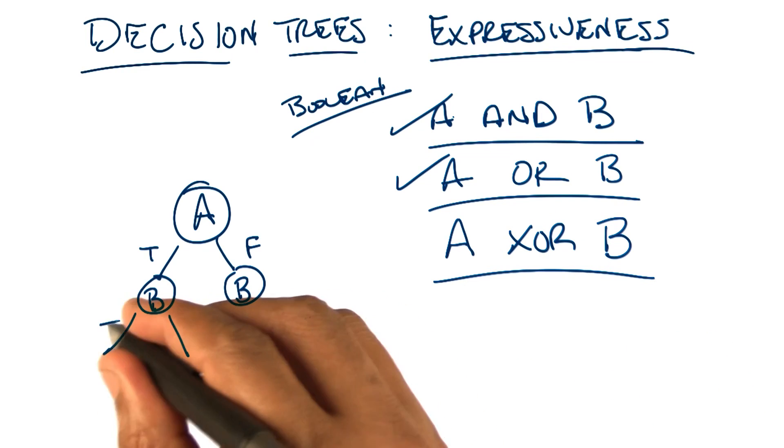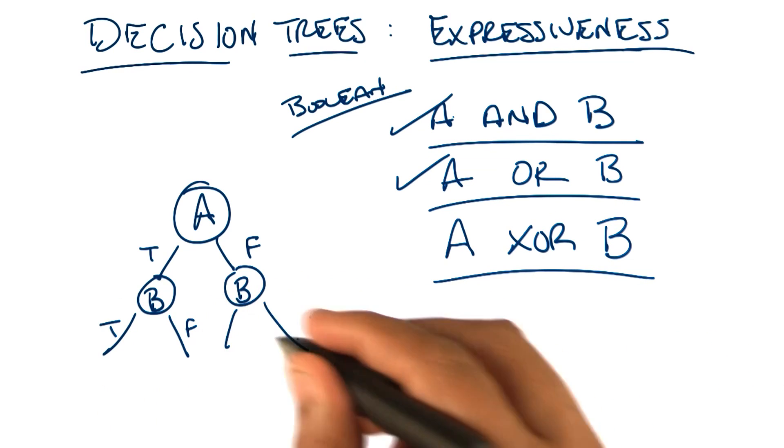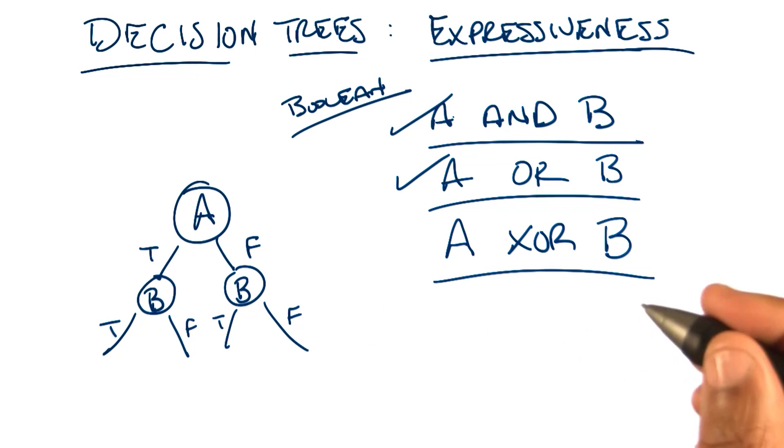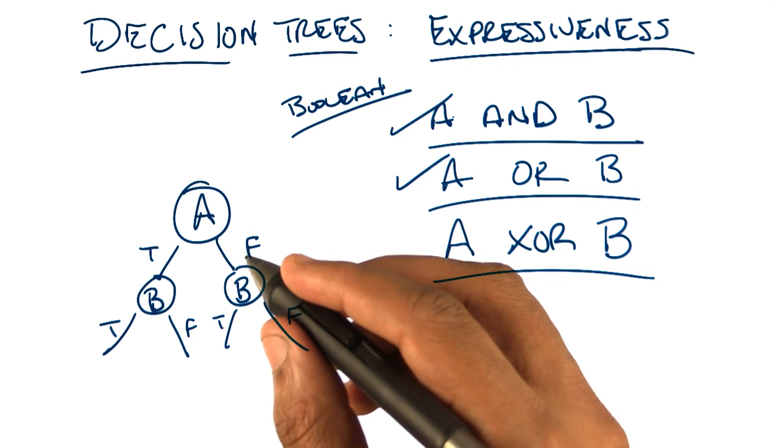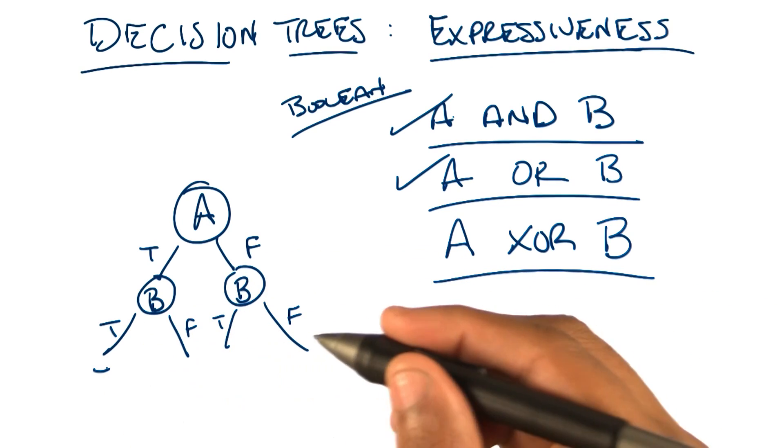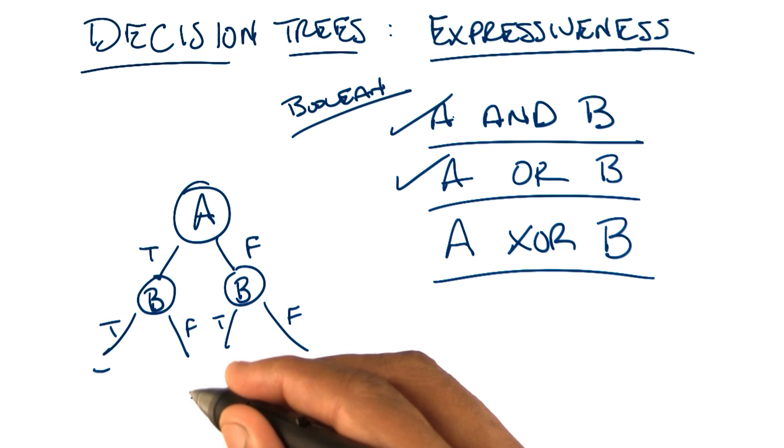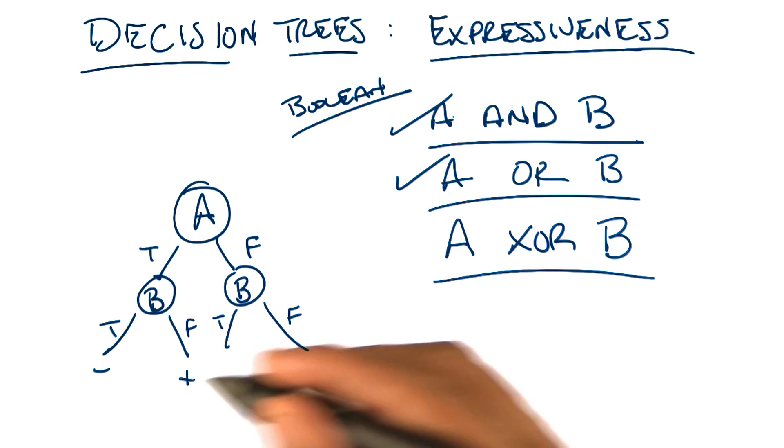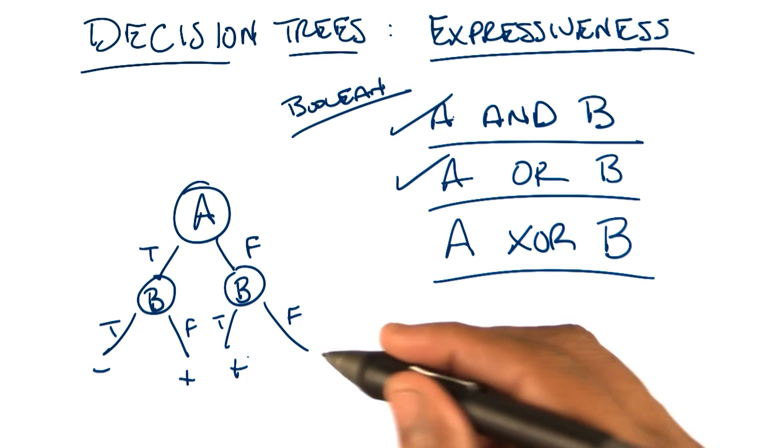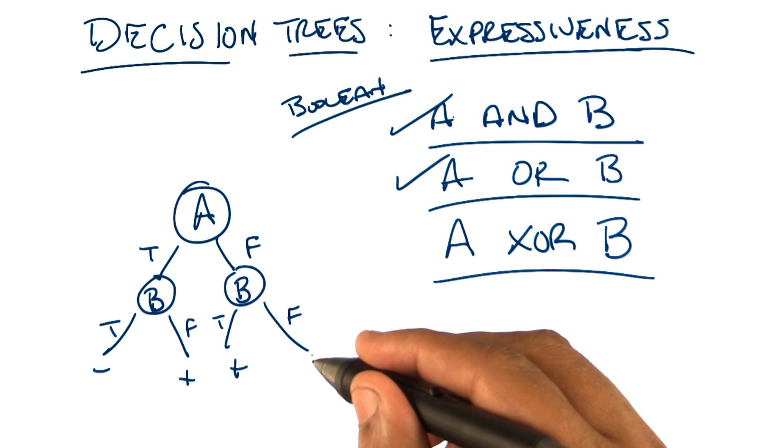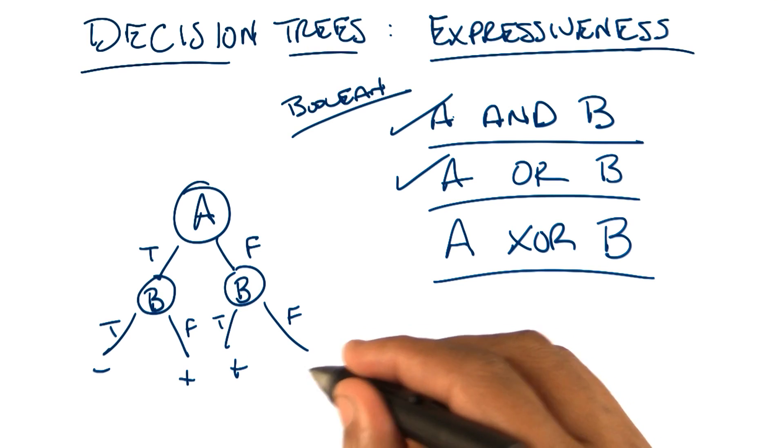So now it should be relatively easy in the sense that there's a separate leaf for all possible inputs. And so we can just write the XOR function on the bottom. So if A and B are both true, then the output is false, because it's exclusive. If A is true and B is false, then it should be true, because A is true. If A is false and B is true, then it should be true, because B is true. And if A and B are both false, then it should be false.